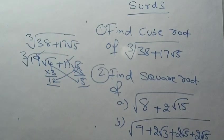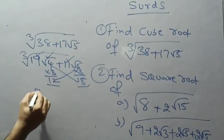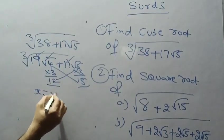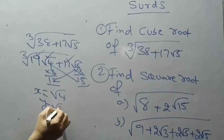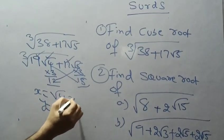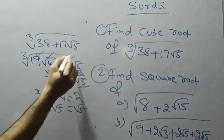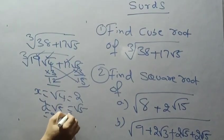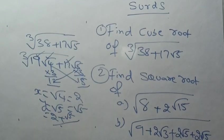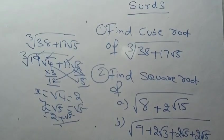The values are x = √4 = 2 and y = √5. So the answer is 2 + √5. This is the shortcut method we apply to find the cube root.